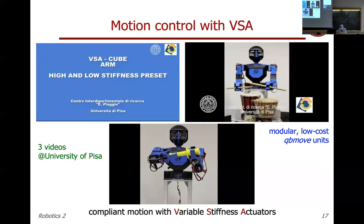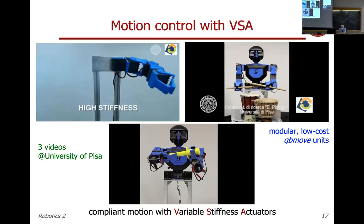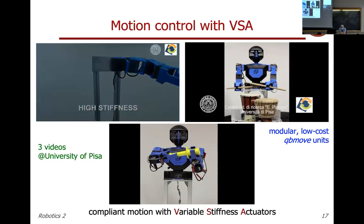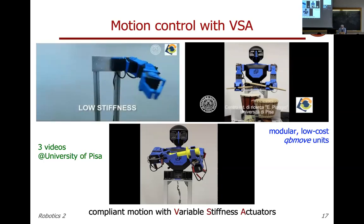Compliance is also important in the VSA context. A simple system developed by a spin-off of the University of Pisa uses modular, low-cost variable stiffness actuation devices — cube units connected by plastic pieces. Each cube gives one degree of freedom; inside are two motors, one controlling motion and one controlling stiffness. With a high stiffness setting the structure is rigid; with low stiffness, the same force produces large oscillations.